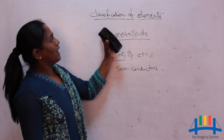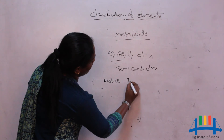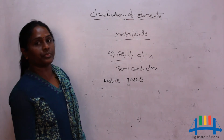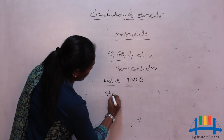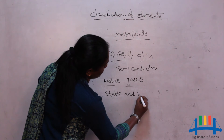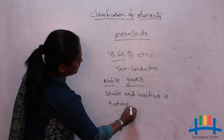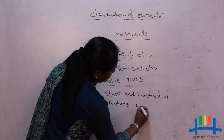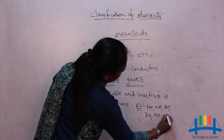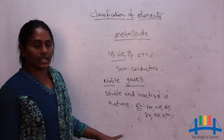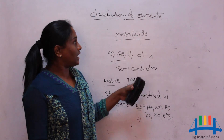One more type of element is noble gases. Noble gases are elements which are stable and inactive in nature. Examples include helium (He), neon (Ne), argon (Ar), krypton (Kr), xenon (Xe), and so on. These elements are called noble gases because they contain eight electrons in their outermost shell. With this, I'll end my topic.